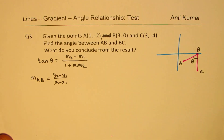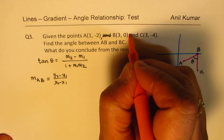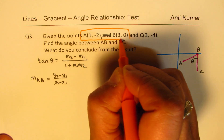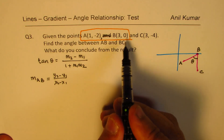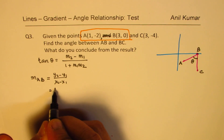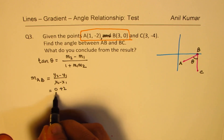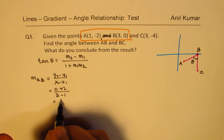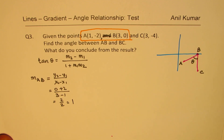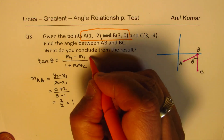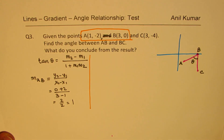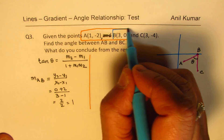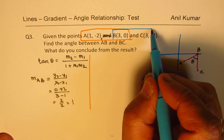For line AB, the points of interest are A(1, -2) and B(3, 0). So: 0 minus minus 2, that is plus 2, and 3 minus 1. That gives you 2 over 2, and the slope M1 is 1. Now let's consider the second line, B to C.